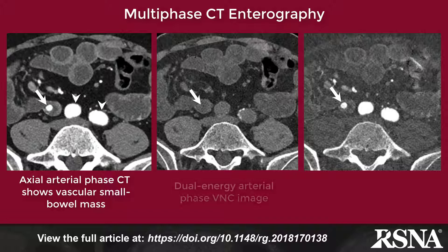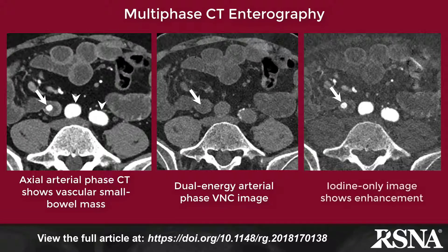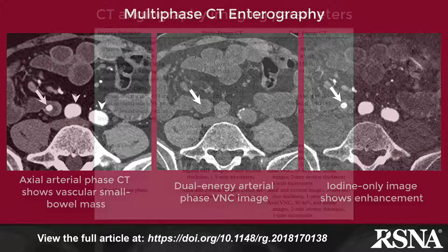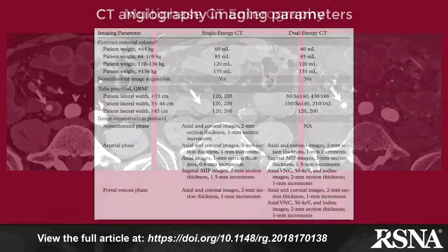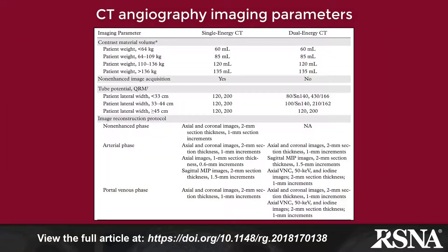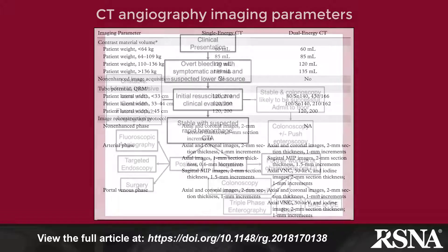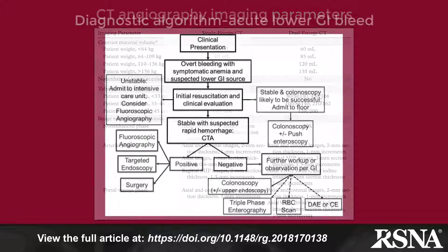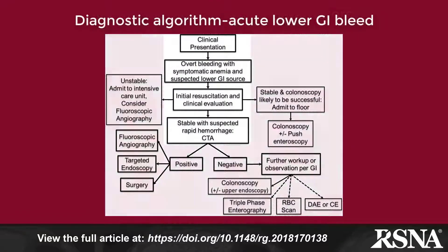Two CT methods are detailed. In particular, CT angiography for the evaluation of acute lower GI bleeding is reviewed, with a detailed CT angiography acquisition protocol provided in table format and its role in the diagnostic algorithm illustrated.